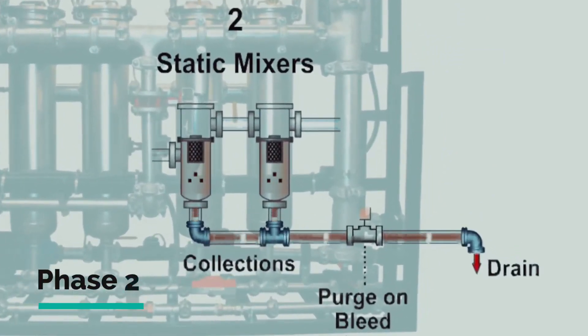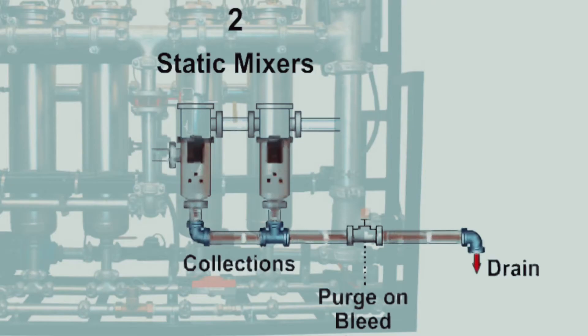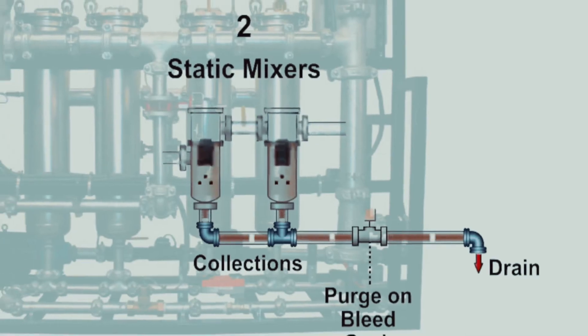Phase 2 is the static mixer debris removal process. The smaller suspended particles have now grown larger to a critical mass, causing them to precipitate into static mixers by gravity. These coagulated solids precipitate through a steel mesh media to the bottom of the static mixer vessels and are later purged to drain during regular system bleed cycles.